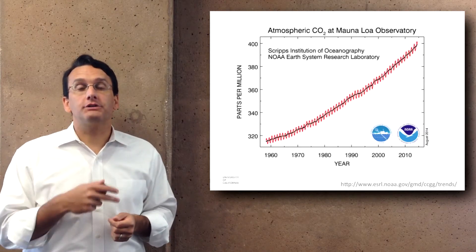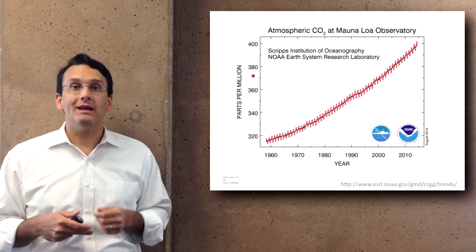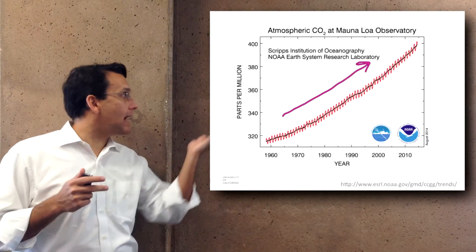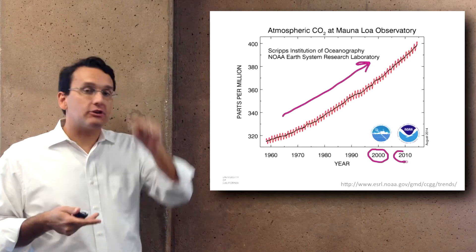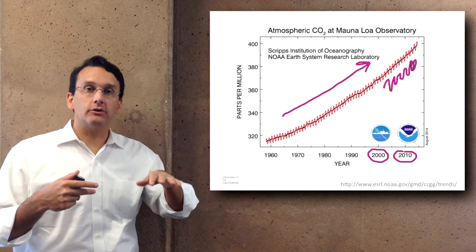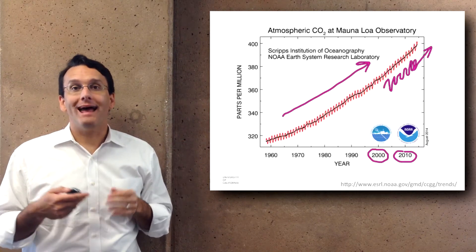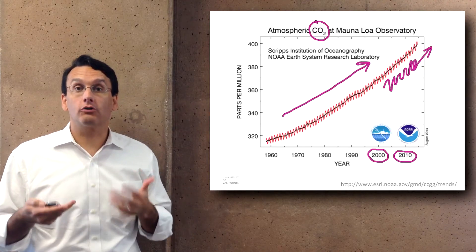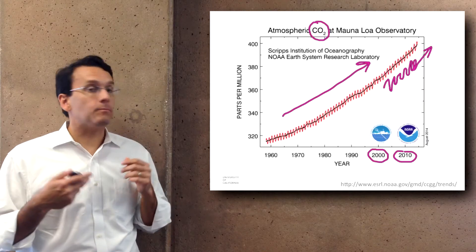Here we see a graph describing atmospheric CO2 concentrations at an observatory in Hawaii, measured in parts per million. The graph is going up year by year — you can see fluctuations within each year as it goes up a bit then down a bit with the seasons, but the trend is continuously upward. This suggests that CO2 concentrations are growing more and more, getting higher and higher around the world.